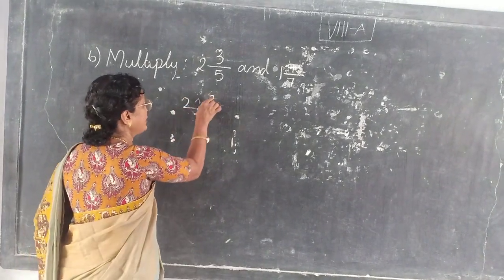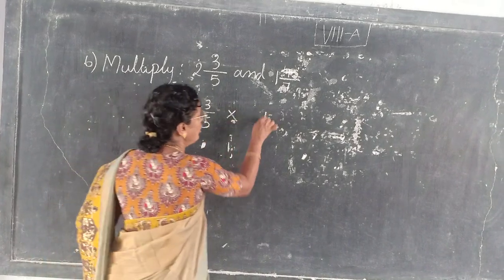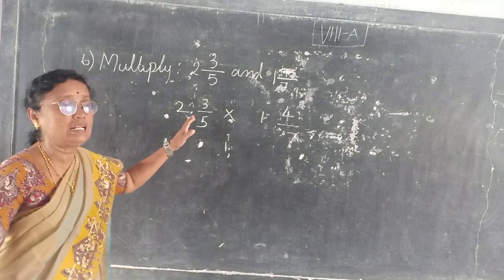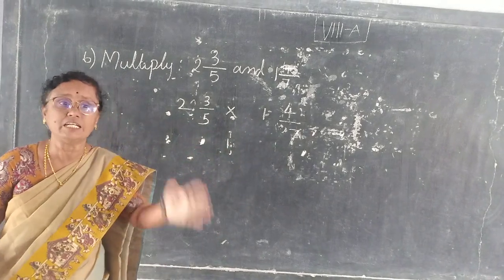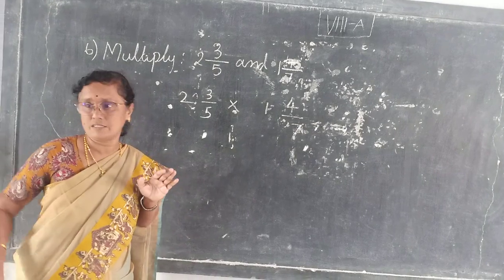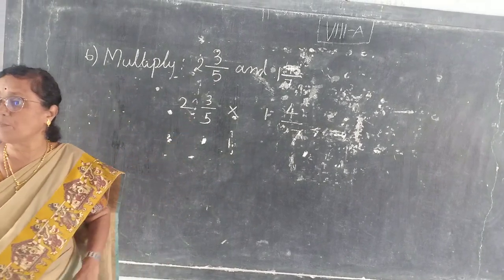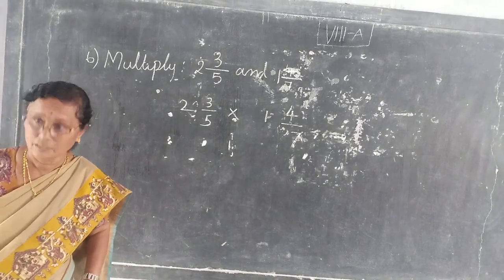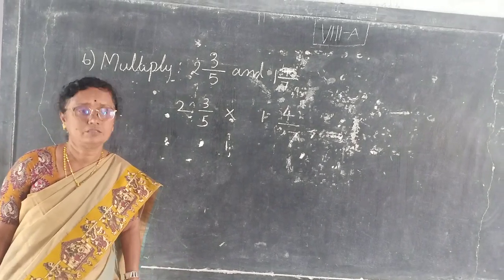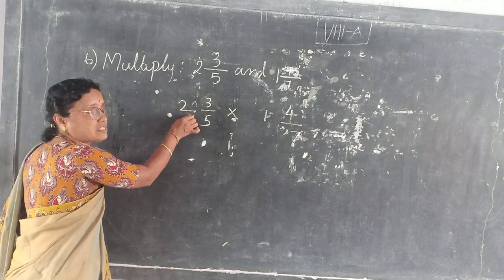2 3/5 into 1 4/7. So mixed numbers can be converted into improper fractions. You can convert this mixed number into improper fractions. So how can you convert this?